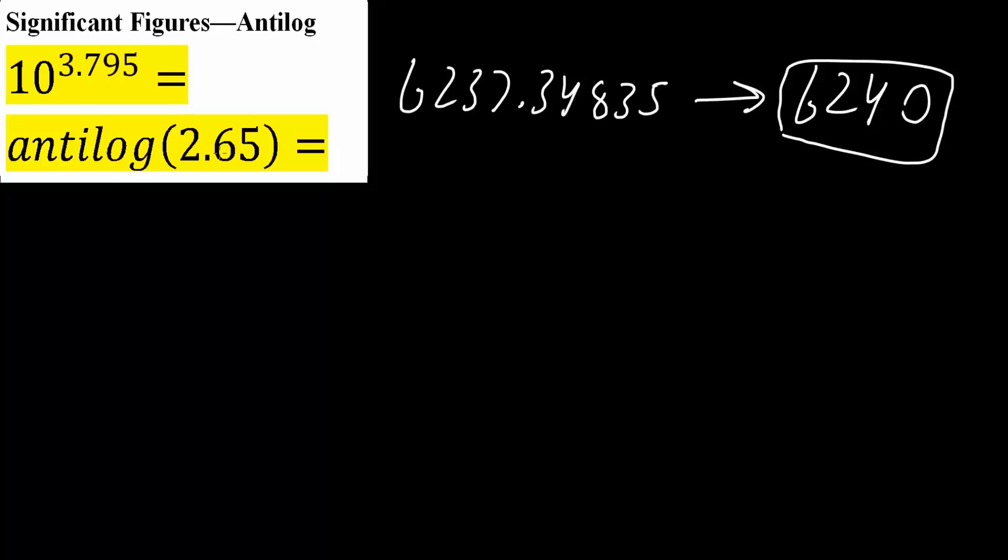Next, antilog 2.65, we would get 446.68359. And the same idea.